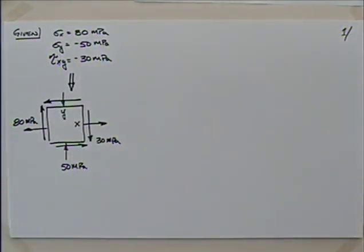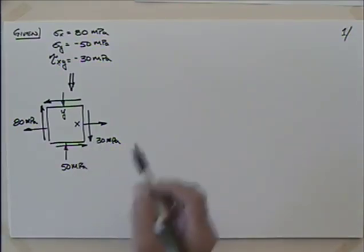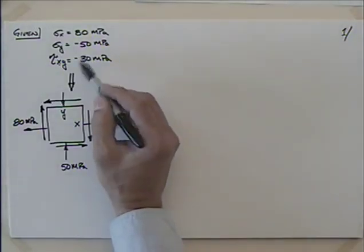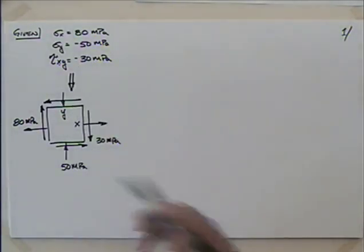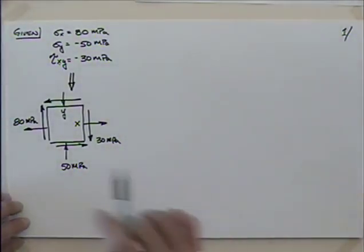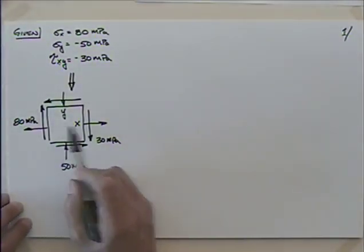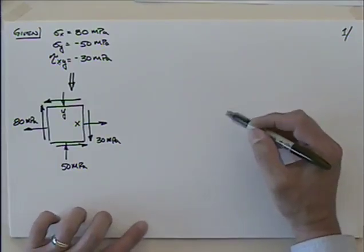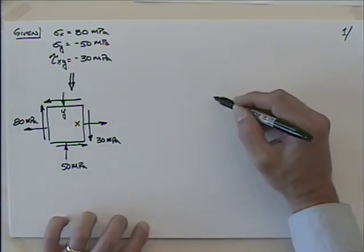If you go back to your notes from the last lecture, that was a starting point for Mohr's circle. I went from the verbiage to the element, which has nothing to do with Mohr's circle — we talked about that a few weeks ago. And now I want to go from the element to Mohr's circle.